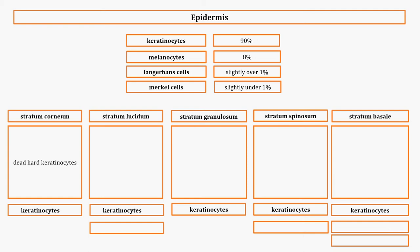The question now is: are the keratinocytes in each layer of the epidermis dead, almost dead, or alive? The stratum corneum is the most outer layer — the layer you see when you look at someone — and the keratinocytes there are dead. In the stratum lucidum, they're also dead and kind of clear. The stratum granulosum is where they are dying — they're almost dead, beginning to lose organelles. The stratum spinosum and stratum basal both have living keratinocytes, with the stratum basal being one single layer and the stratum spinosum being multiple layers.